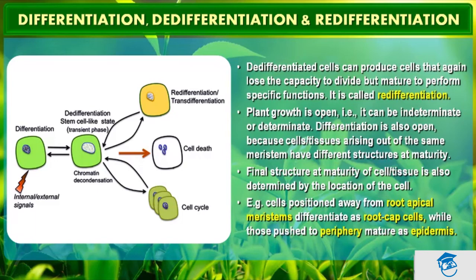The final structure at maturity is also determined by the location of the cell. For example, cells positioned away from the root apical meristem differentiate as root cap cells, while those pushed to the periphery mature as epidermis. This concludes our discussion of re-differentiation.